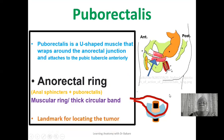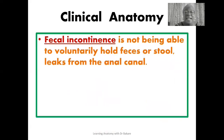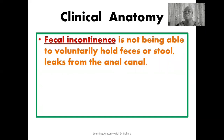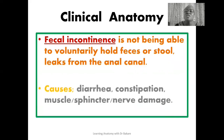The anorectal ring is used as a landmark for locating tumors and is important in clinical practice — its thickness is used to establish the existence of tumors. Regarding clinical anatomy, fecal incontinence is the inability to voluntarily hold feces, resulting in uncontrollable release. This can occur as a result of diarrhea, constipation, damage to the sphincters, or damage to the nerves that control sphincter action.